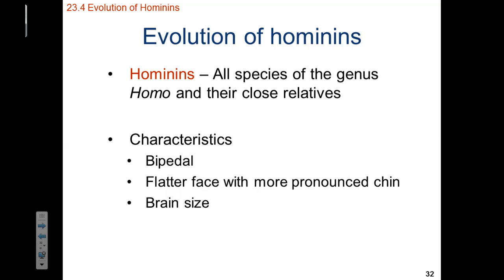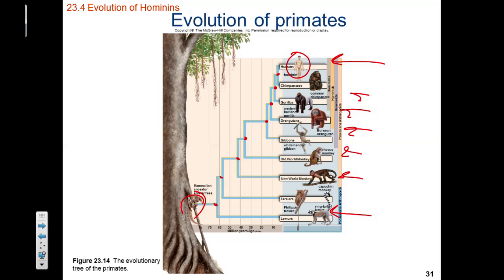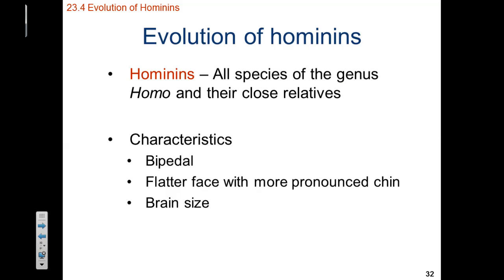Hominins are a group that includes the genus Homo and other close relatives. Hominins include gorillas, chimpanzees, and humans, but they don't necessarily include rhesus monkeys, lemurs, or tarsiers. Some very key characteristics of hominins — and I need to emphasize that hominins is an umbrella term that includes Homo as a subcategory — are that they are bipedal, have a flat face with pronounced chin, and have relatively large brain sizes.